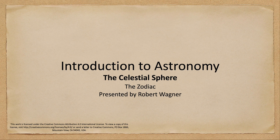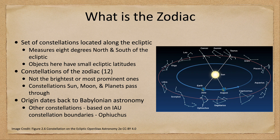Greetings and welcome to the introduction to astronomy. In this week's discussion on the celestial sphere, we are going to talk about the zodiac and what that means in astronomy. So let's get started — we want to first of all talk about what is the zodiac. What do we mean when we say that?